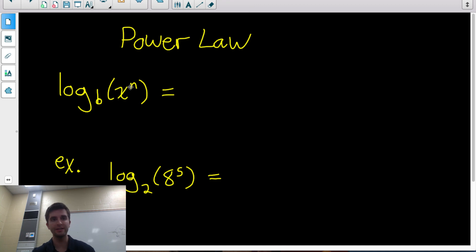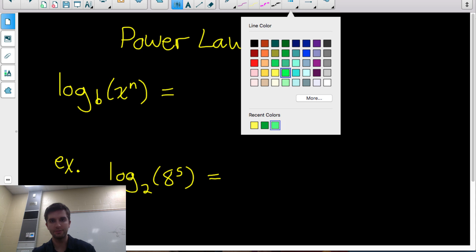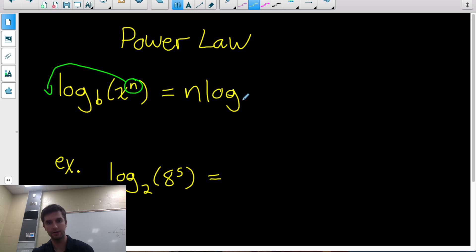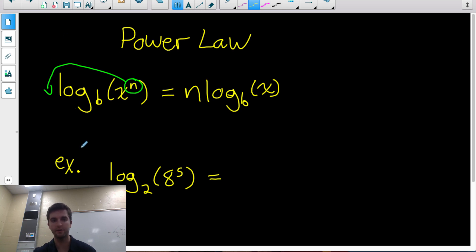So the power law of logarithms tells us that if we have a log of a power — so we're taking the log of x to the n — we're allowed to take the exponent of the argument, this n, and rewrite it as the coefficient of the log. So this equals n multiplied by log base b of just x. The exponent of the argument can be written as the coefficient of the log.